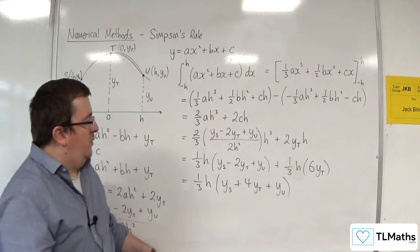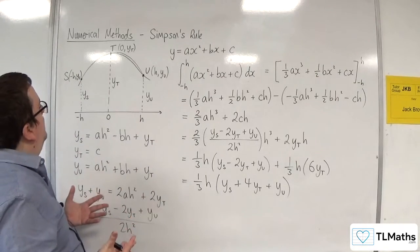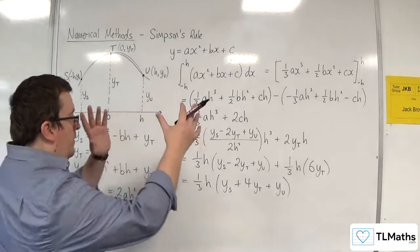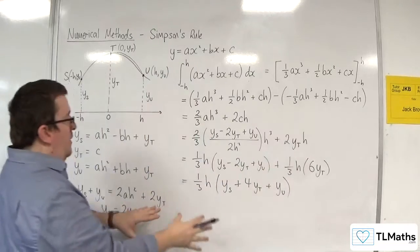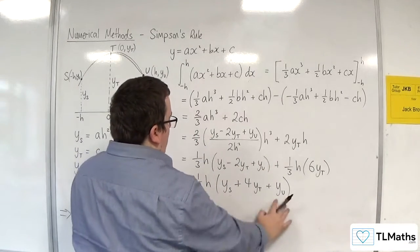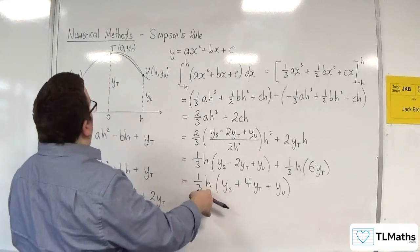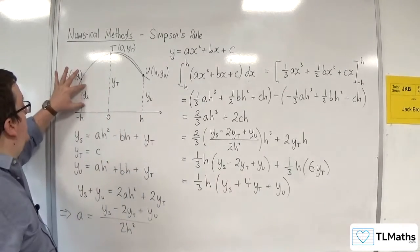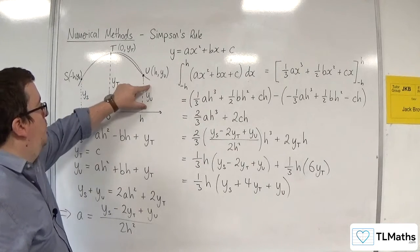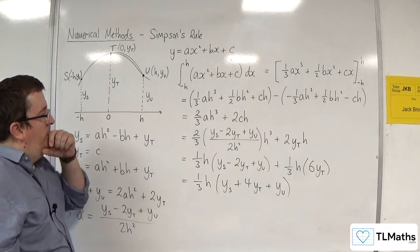Because one third times the 6 makes the 2. So now I can factor the one third h out, and I've got the ys, I've got minus 2yt plus 6yt, so that's plus 4yt, plus the yu. And so now we have the beginnings of our formula.